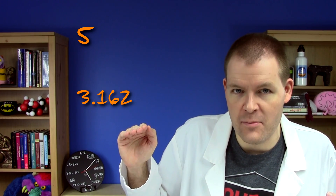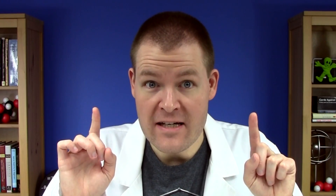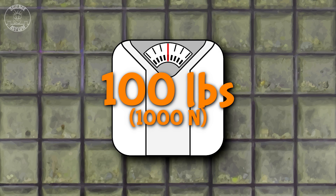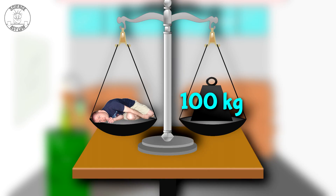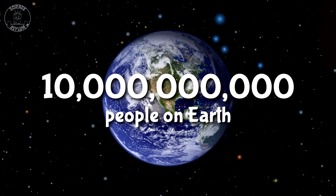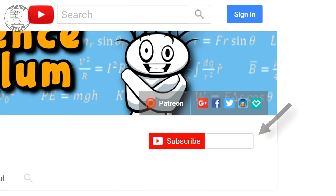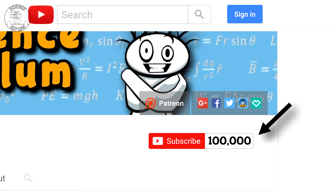By that reasoning, my height is 10 feet or 1 meter, my weight is 100 pounds, my mass is 100 kilograms, my age is 100 years, and there are 10 billion people living on the planet. Our next subscriber goal is 100,000, which by orders of magnitude we technically achieve at 31,623. It's crazy, but it gives us really easy numbers to work with.